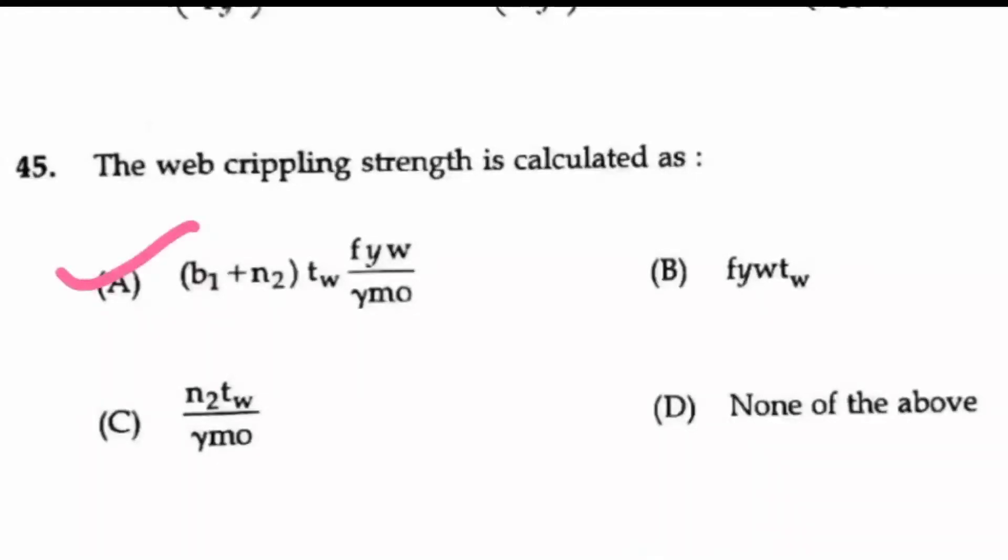(MK/fy)^(1/3). Option B is the right answer. Question 45: The web crippling strength is calculated as (b1 + n2) × tw × fyw / γm0. Thank you and keep watching for the continuation of this question paper discussion.